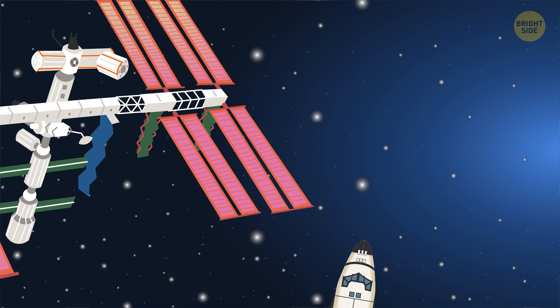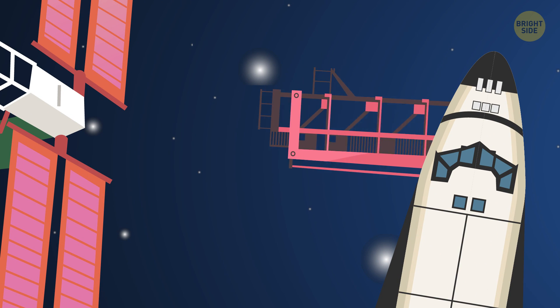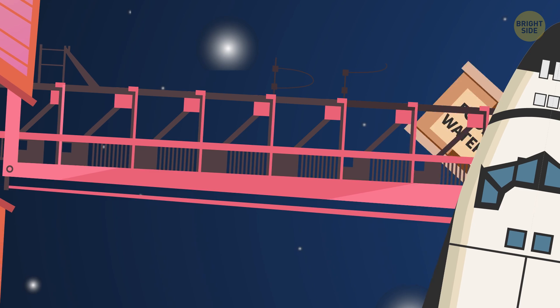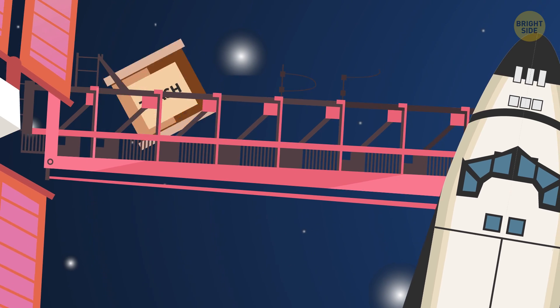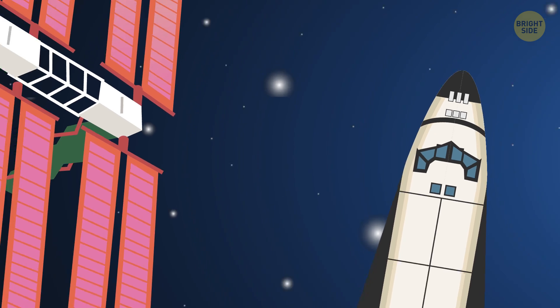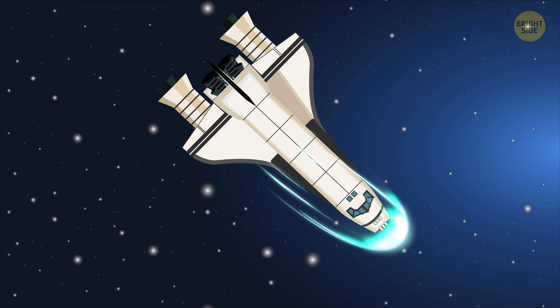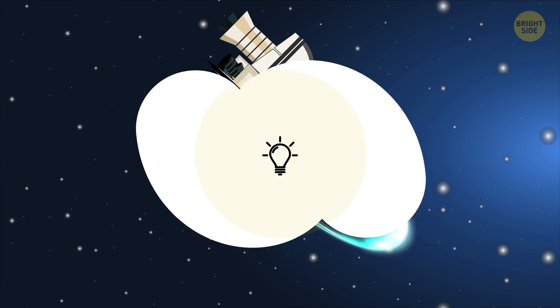Whenever they get a delivery, the cargo ship is docked to the station. The astronauts get what they need from it, and then they load this ship with their trash. After a few weeks, the supply vehicle is disconnected from the station, and it heads back to Earth. It might make it to the surface or burn up in the atmosphere. But in short, astronauts don't litter.